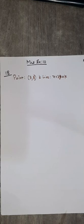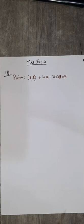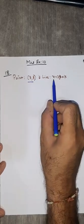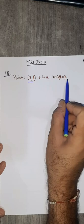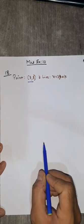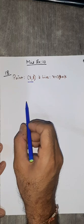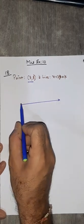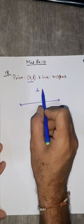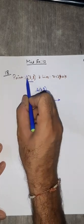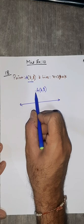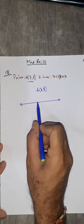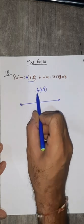Continuing with exercise 10, question number 18. You are given a point (3, 8) and one line x plus 3y equals 7. You want the image of this point. Image means: given this line, and this is point A at (3, 8), find the point which is at an equidistance from this line on the other side.